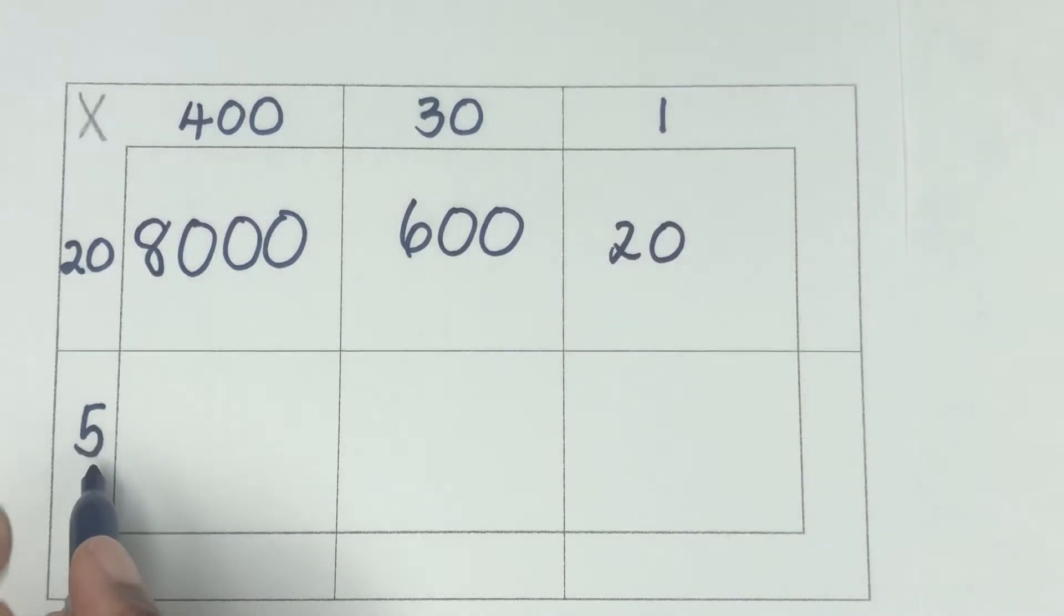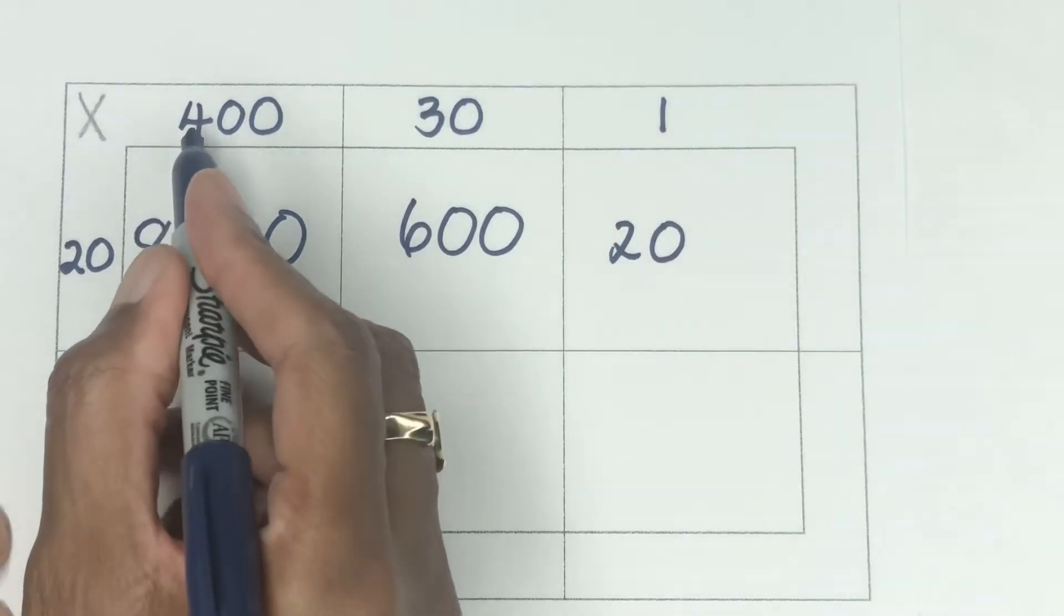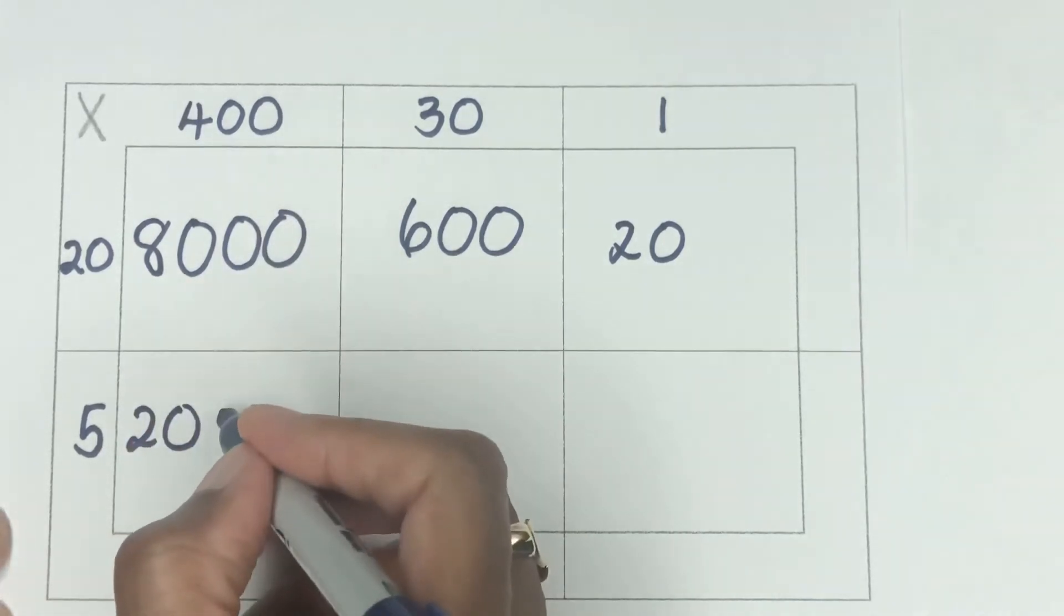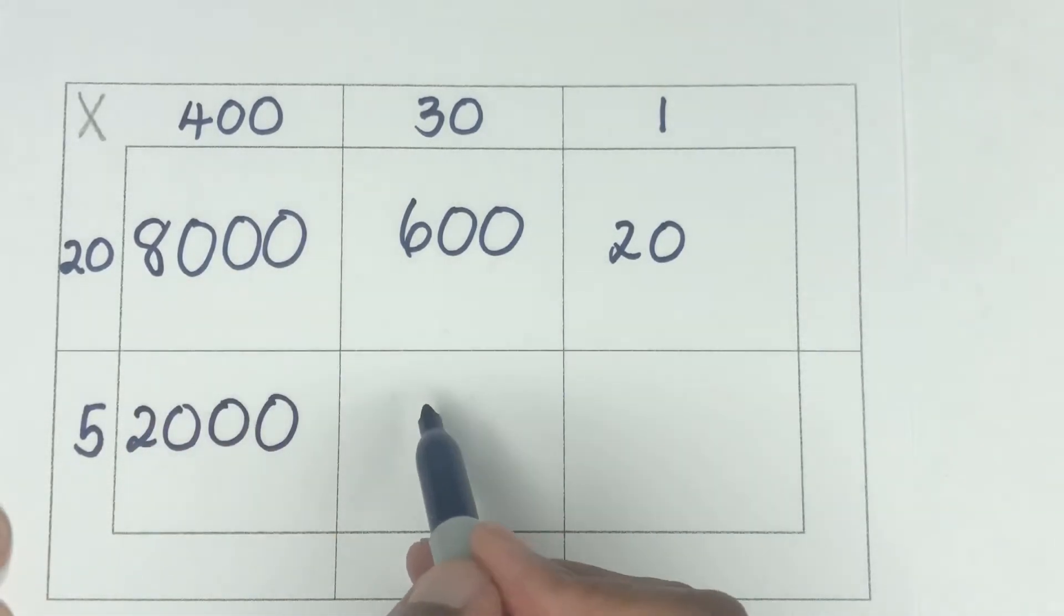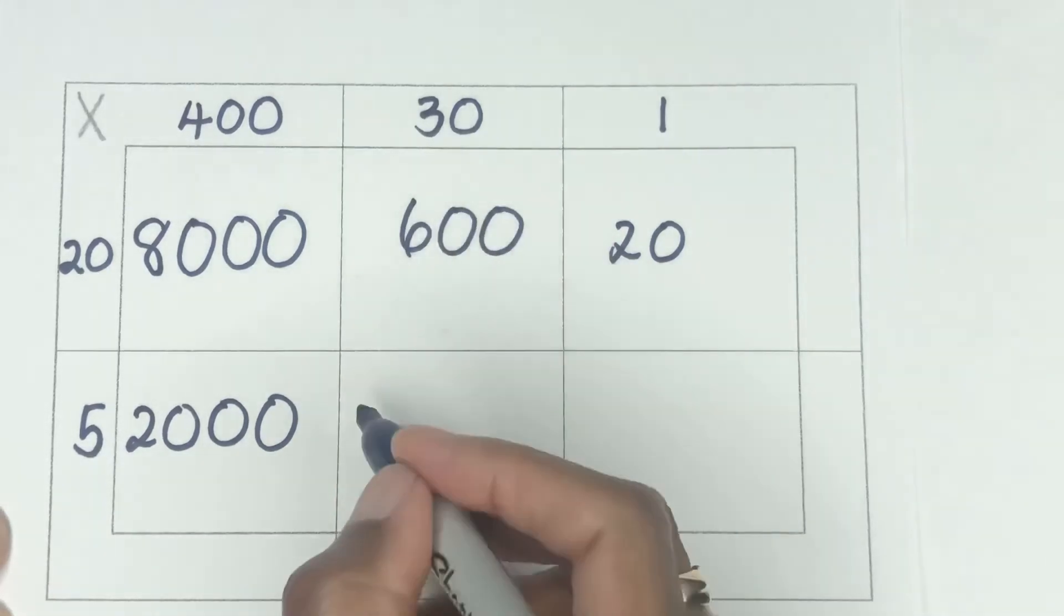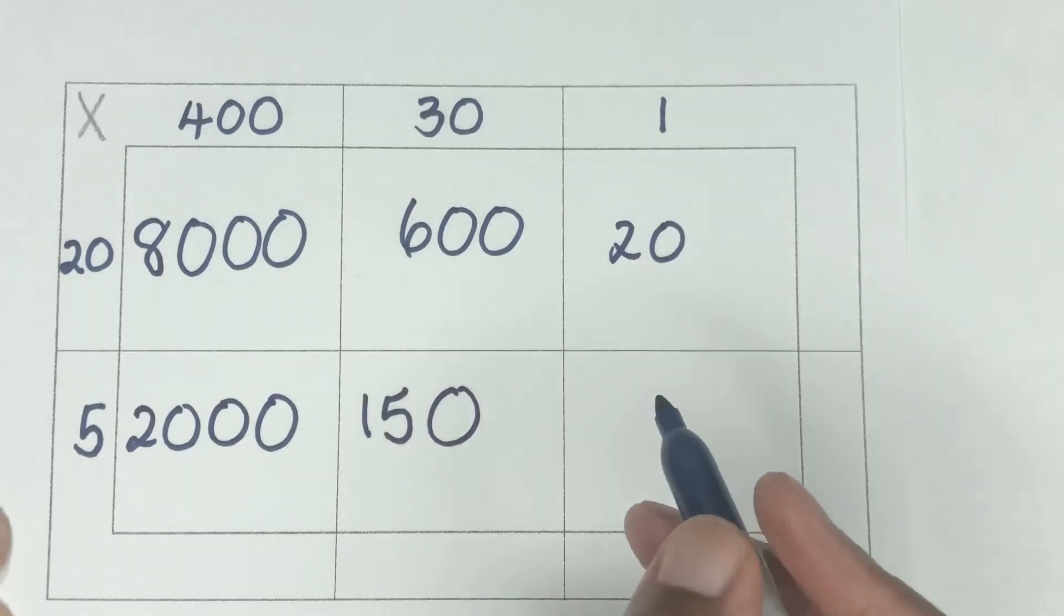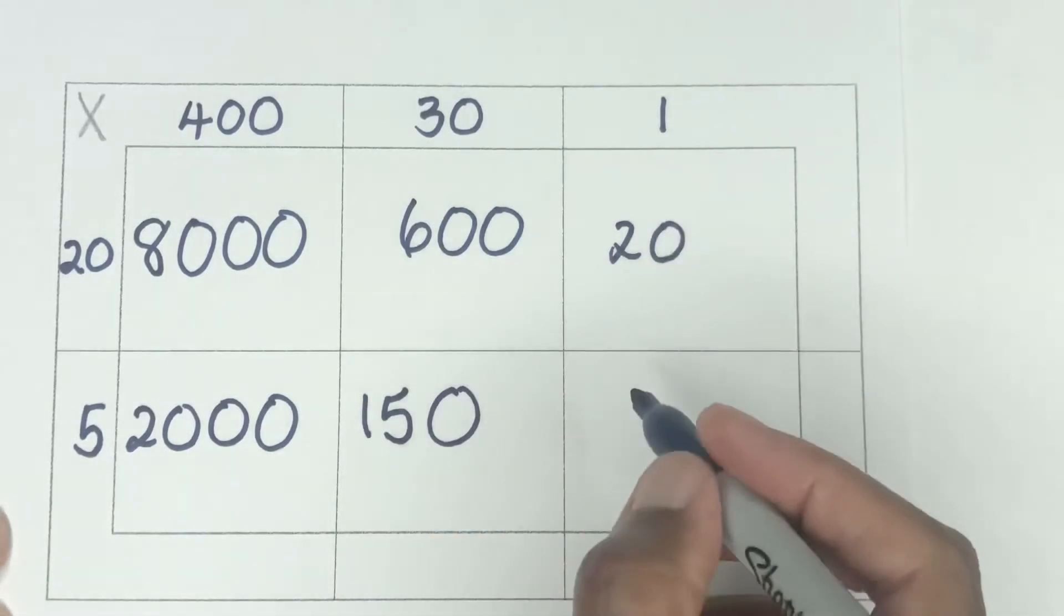And then down here in the fourth box, we have five times four, which is 20. And then you tag on the two zeros, which will give you 2000. In this next box, we have five times three, which is 15. And then you tag on that zero there to make it 150. Then you have five times one is five.